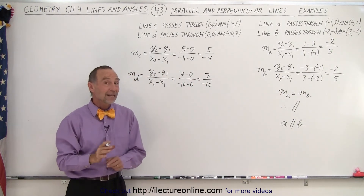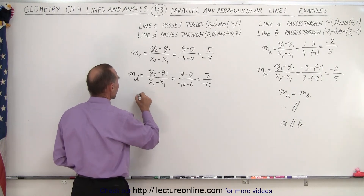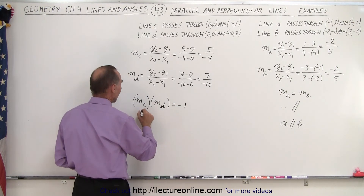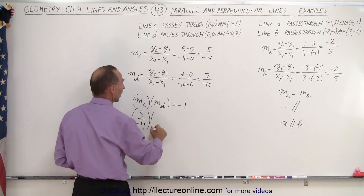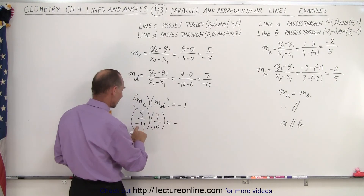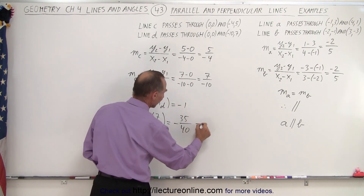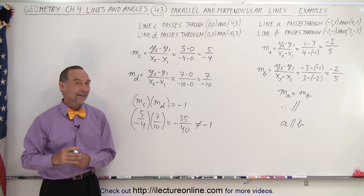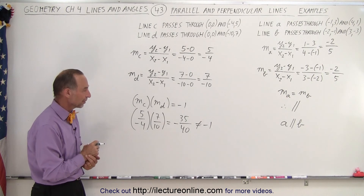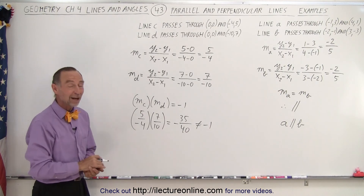Notice the slopes are definitely not equal. But is one the negative inverse of the other? Let's find out. Let's see if slope C multiplied times slope D equals negative 1. So we have 5 divided by negative 4, multiplied by 7 divided by negative 10. This becomes negative 35 divided by 40. Well, that's not negative 1, and therefore one is not the negative inverse of the other. Therefore we can say that those lines are neither parallel nor perpendicular to one another. And that is how it's done.